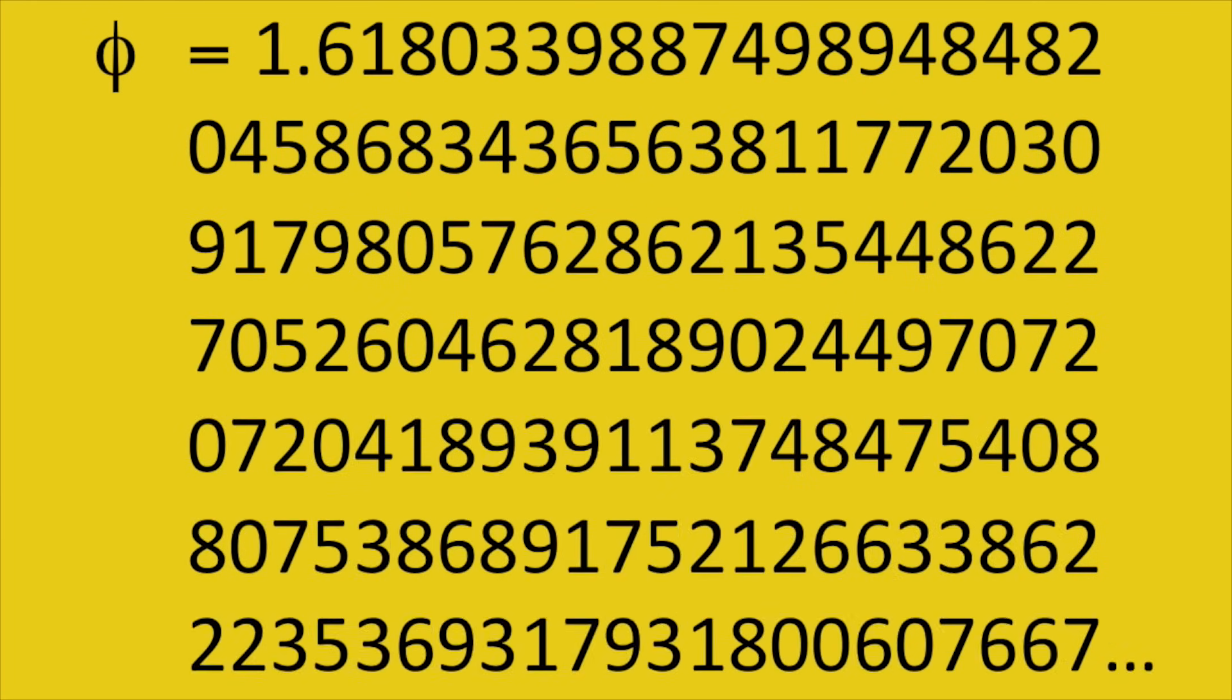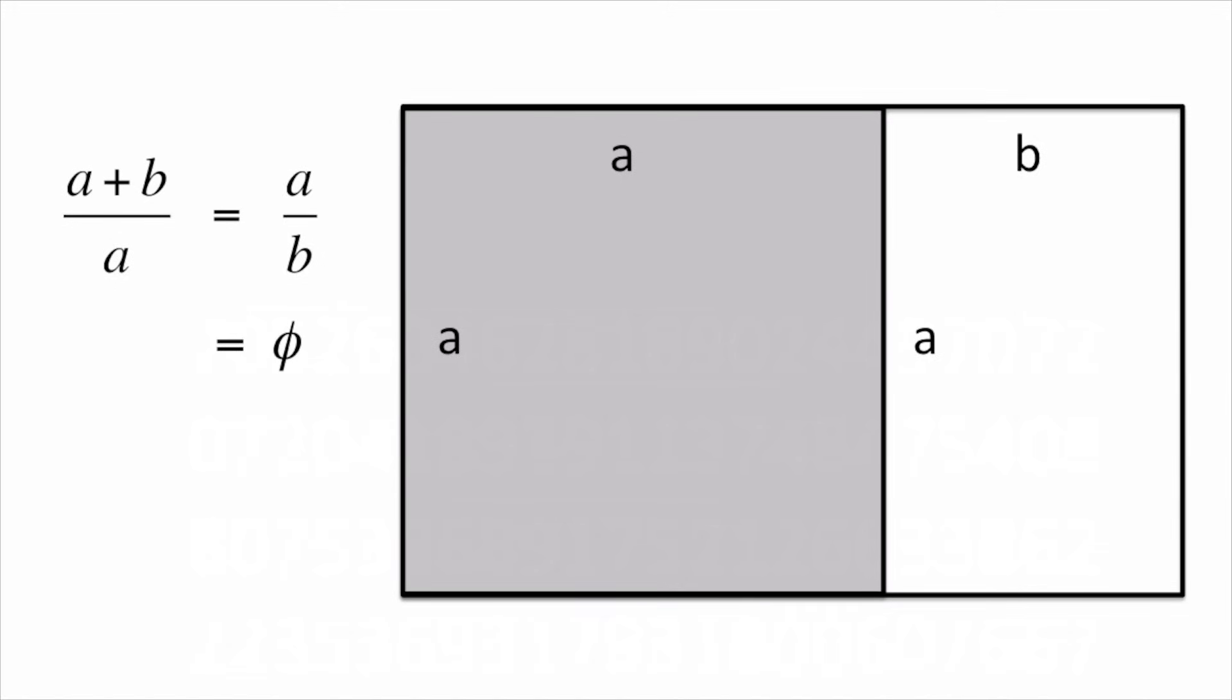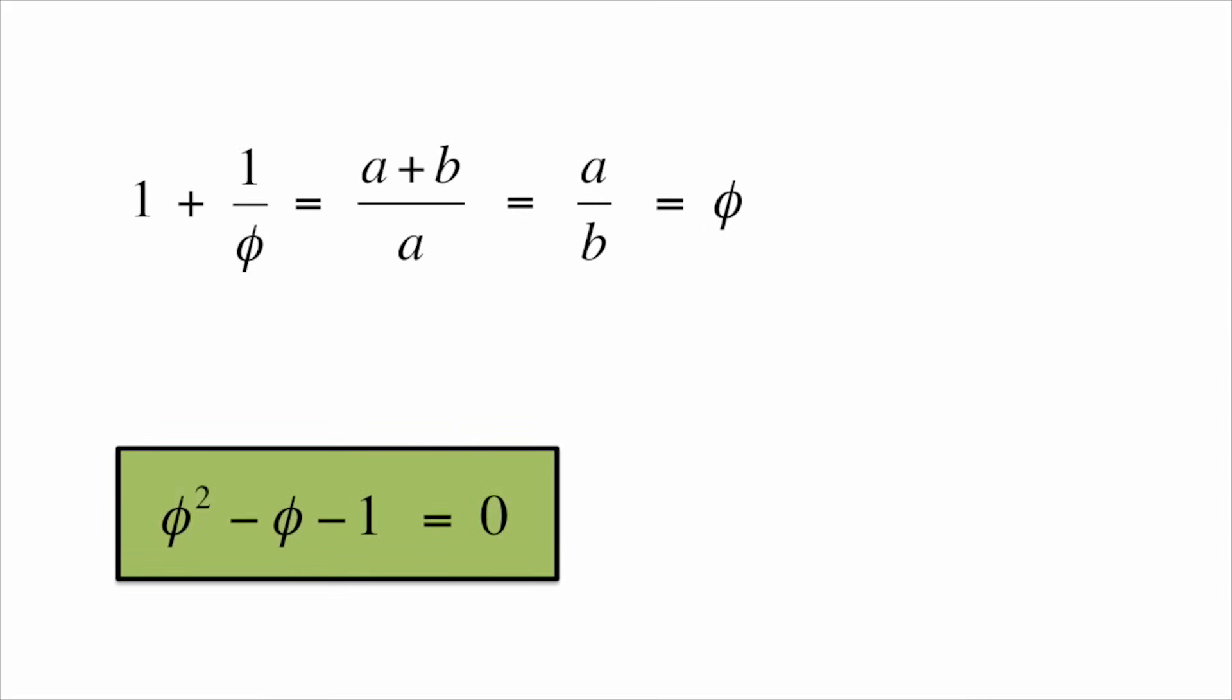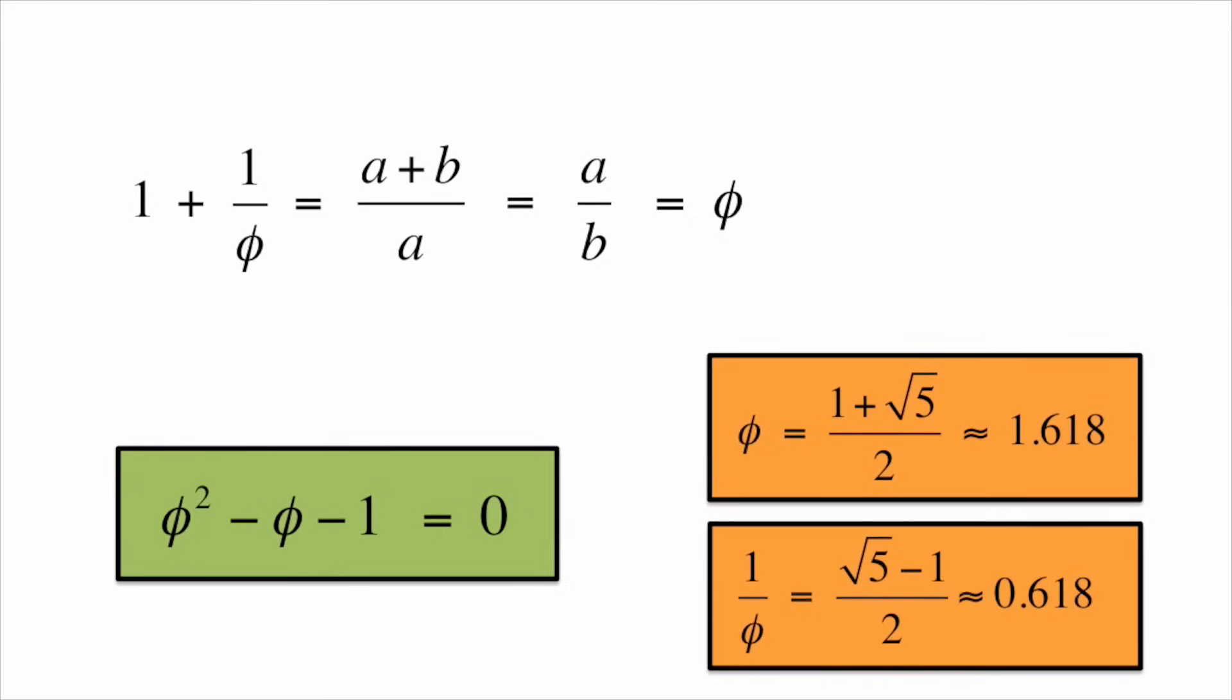First, what is the value of the golden ratio? Remember that it is defined as the quotient A over B. By rewriting the equation and doing a bit of algebra, one finds that Phi satisfies this quadratic equation. We use this to solve for Phi and then find a similar expression for 1 over Phi.